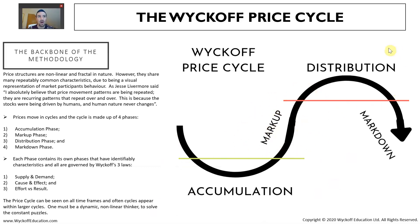When the stock is in strong hands and the composite operator has accumulated their line, we have the markup phase - phase two. At the top of the market is the distribution phase, where the smart money has made their money and is now selling. Then following that is phase four, the markdown phase, where supply is overwhelming demand and price comes crashing back down. The cycle then repeats, and you'll see it time and again in indexes, ETFs, stocks, Bitcoin, Forex, commodities - the Wyckoff methodology applies to all instruments.